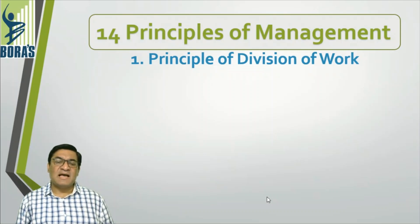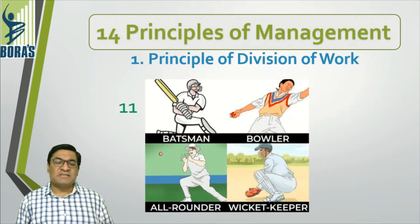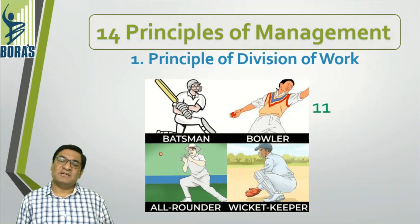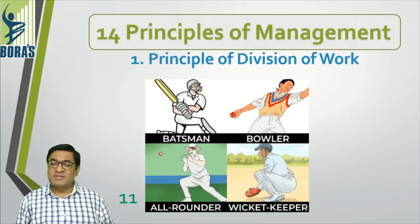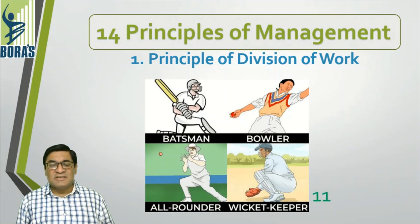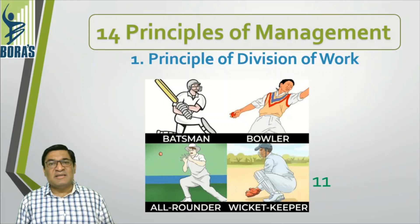Henry Fayol's first management principle is Division of Work. Let's take an example. If you are the captain of a team, you wouldn't field a team of 11 batsmen, or 11 bowlers, or 11 all-rounders. Instead, a good combination would be 5 batsmen, 4 bowlers, 1 all-rounder, and 1 wicket keeper — that makes a good combination.